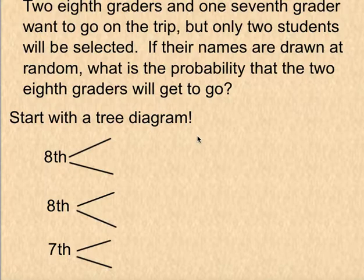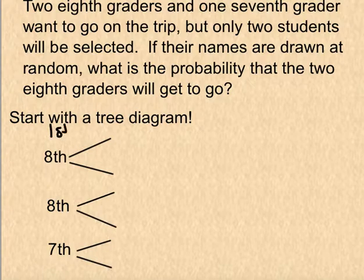Two 8th graders and one 7th grader enter a drawing, but only two students will be selected. If names are randomly drawn, what's the probability that both 8th graders will be chosen? In a bucket we have three slips of paper — one for each student: 8th grader, 8th grader, and 7th grader. On the first draw, we could get an 8th grader, another 8th grader, or a 7th grader.